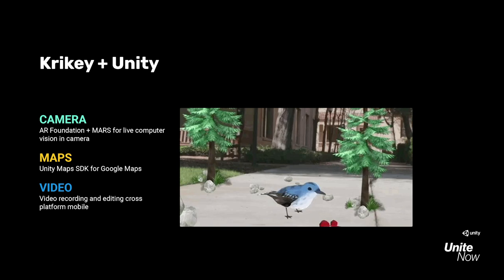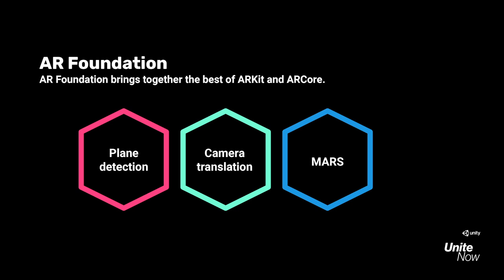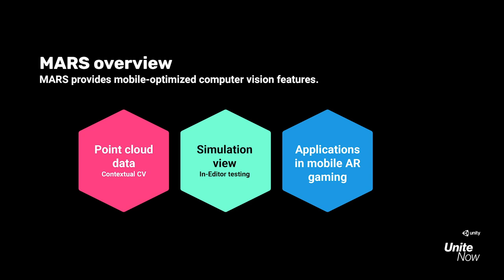We're excited to share more about how we use the Unity game engine. We'll start with the camera. Crikey uses both AR Foundation and Mars to generate live computer vision games and experiences in camera. We also use the Unity Maps SDK with Google Maps to build location-based AR games. Crikey has also built a custom video solution that allows us to record and live edit users' game videos. AR Foundation brings together the best features of ARKit and ARCore tools — including plane detection, which allows us to spawn games on the user's actual ground plane, and camera translation, which allows us to approach virtual objects as though they were in the physical room with us.